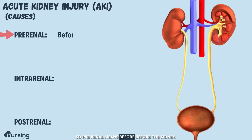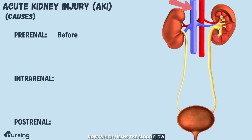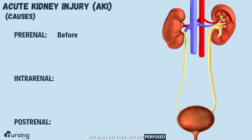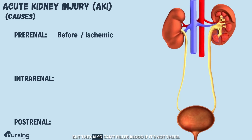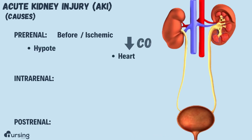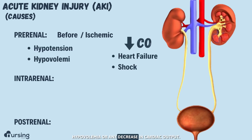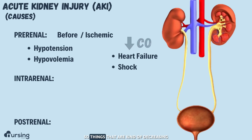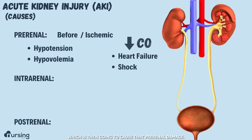Pre-renal means before the kidney, so the source of the problem is what comes before the kidney — meaning the blood flow into the kidneys themselves. If blood isn't flowing into the kidneys, not only do they not get perfused and ischemic damage can occur, but they also can't filter blood if it's not there. Some causes of pre-renal kidney injury would be hypotension, hypovolemia, or any decrease in cardiac output, such as heart failure or shock.